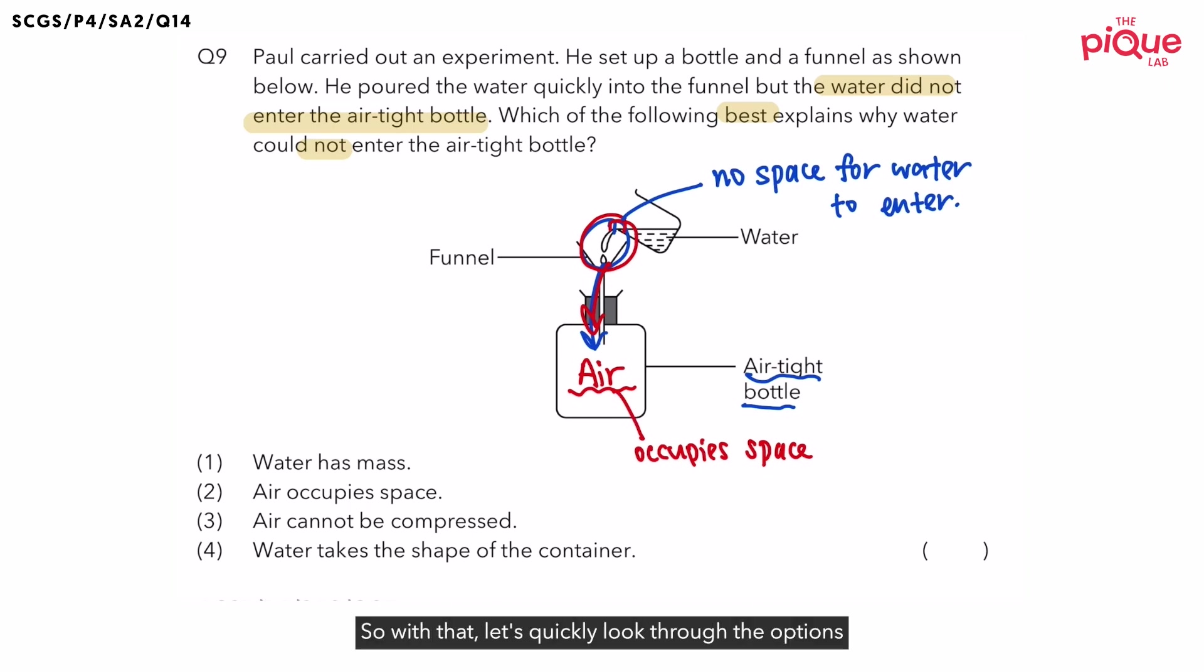So with that, let's quickly look through the options to see which option best explains the observation. Now, option number one. Water has mass. Is this statement correct? Yes. This is because water is a matter and all matter has mass. But does this statement explain why water could not enter the airtight bottle?